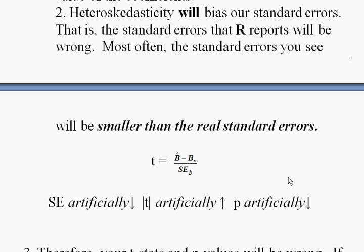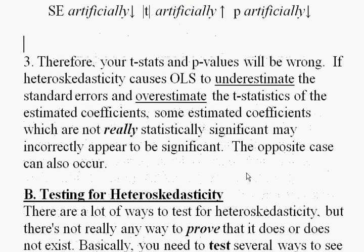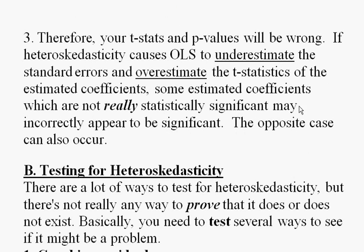Other times, heteroscedasticity will make you think the standard error is too high, and in any case it leads you to make the wrong decisions. When your t-stats and p-values are wrong, you'll be making Type I errors you shouldn't many times, but sometimes you'll also be making Type II errors that you could have avoided if you had fixed the heteroscedasticity.